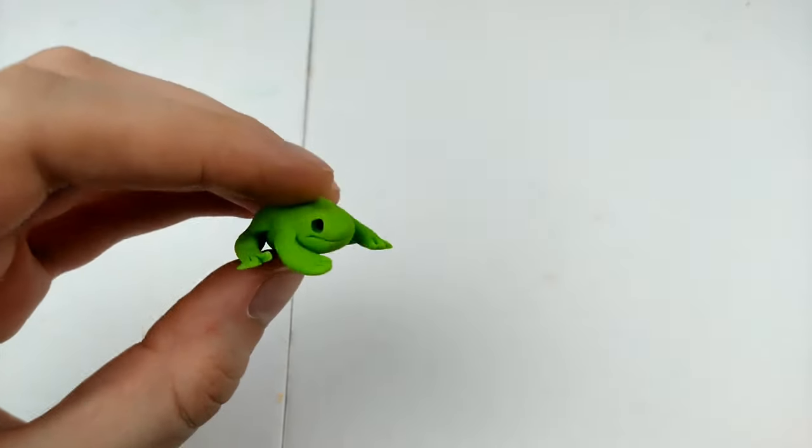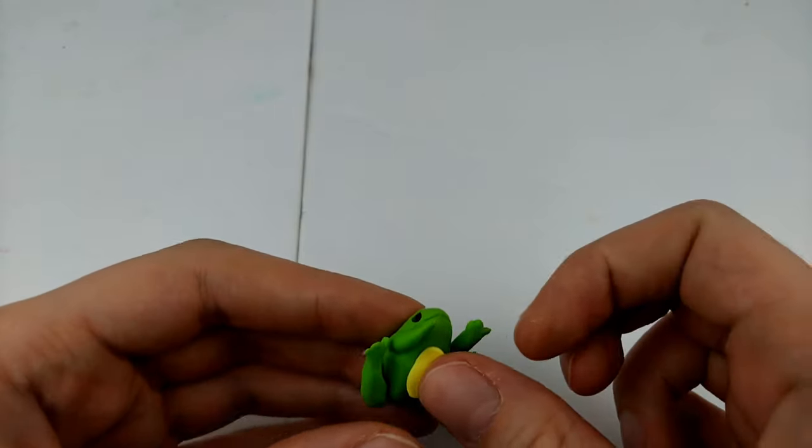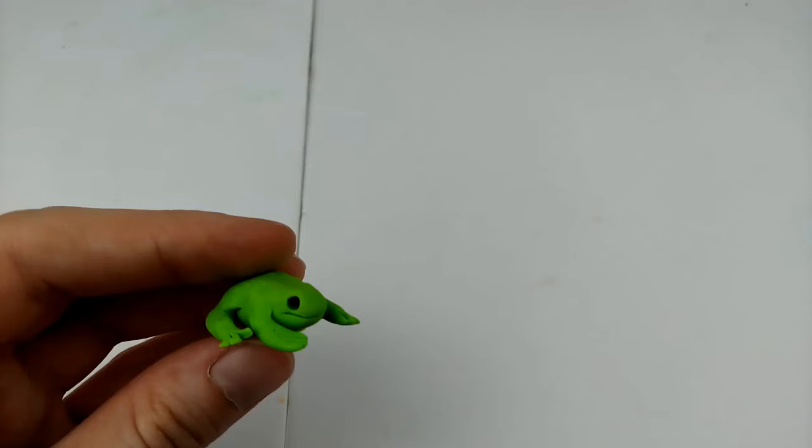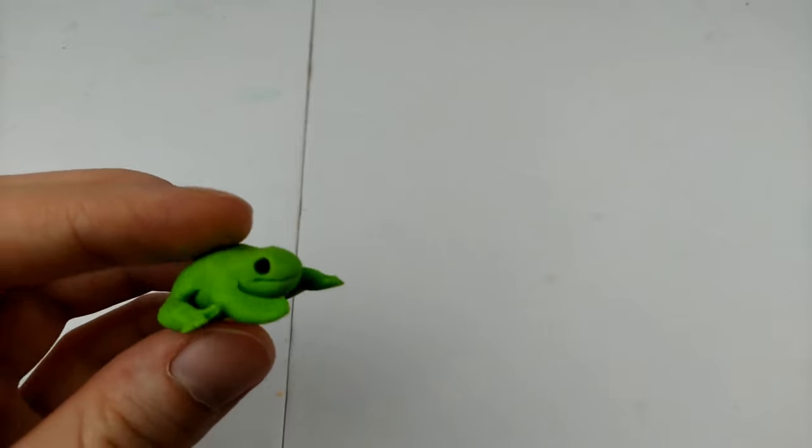And if you want, you can add a little bit of color to the belly like I did. And once you add little black balls of clay for the eyes, you're now ready to bake and your little frog is done.